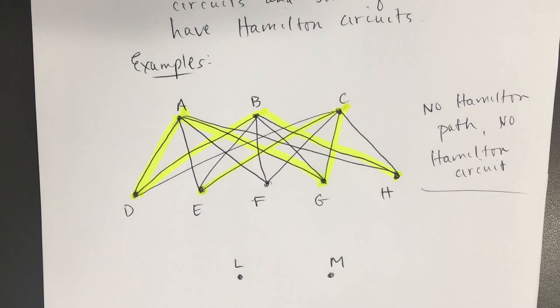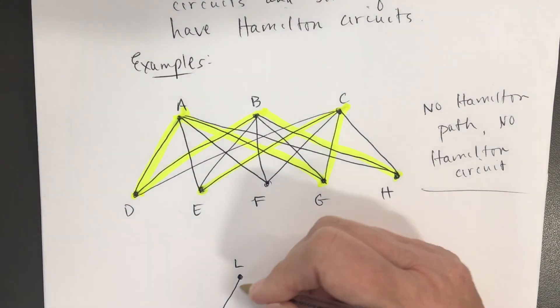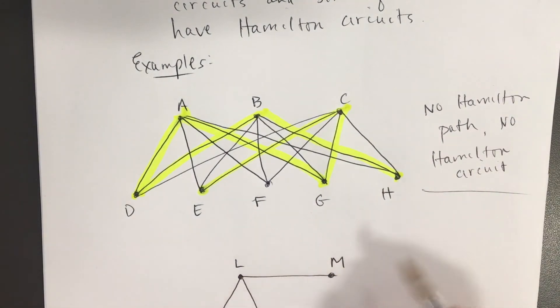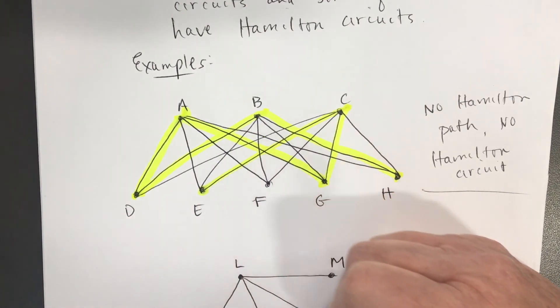These vertices are connected in such a way that there is an edge between any two pairs of vertices. So name any two, and we're going to put an edge. L to N, L to O, L to M, and L to P.